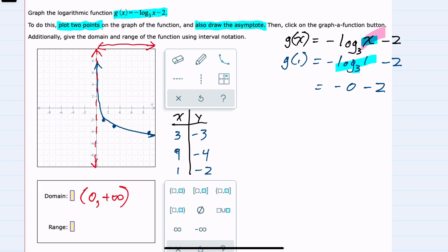The range, looking up and down our graph, shows that it keeps moving up and keeps moving down. So our range will be all values negative infinity to positive infinity.